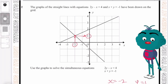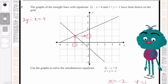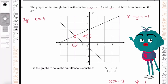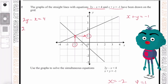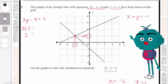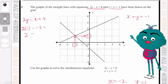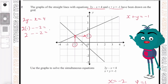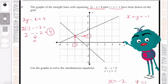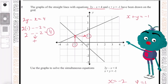Let's go ahead and check this. We have 2y minus x equals 4, and x plus y equals minus 1. We know y equals 1, so 2 times 1 is 2. And x is minus 2, so 2 minus (minus 2) gives us positive 4, because two negatives give a positive. And there we are.